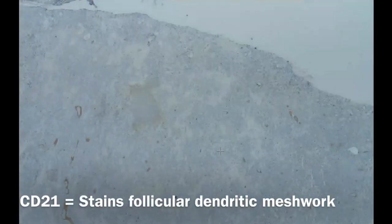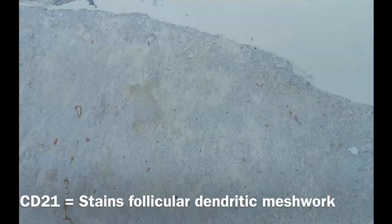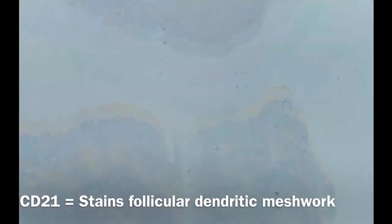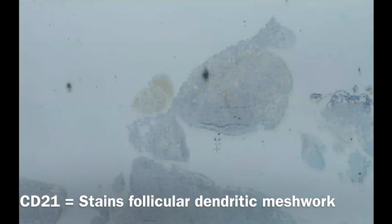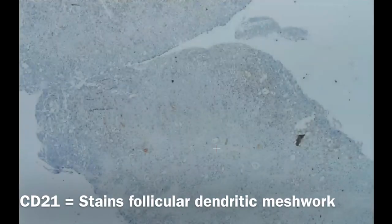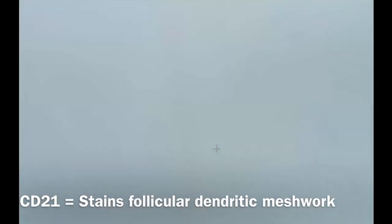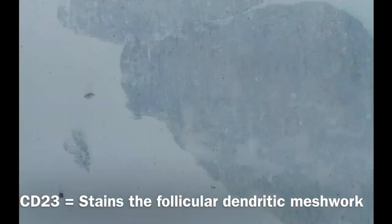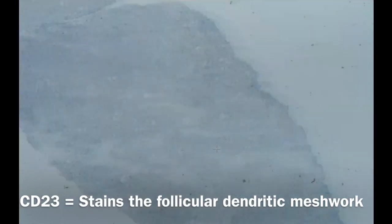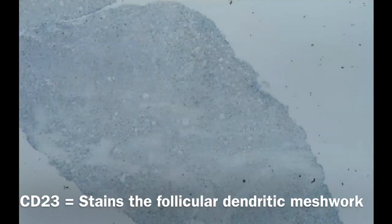This is CD21, which we use to stain the follicular dendritic meshworks. With this huge infiltrate of lymphocytes, we don't have any dendritic meshwork — it's all lost. To confirm this, we also use CD23, which again stains the follicular dendritic meshwork, and it's all negative.